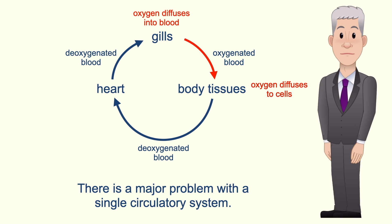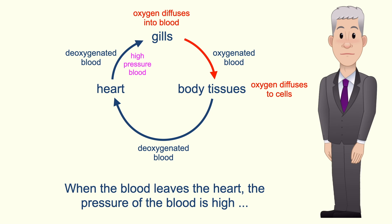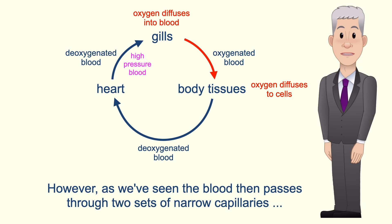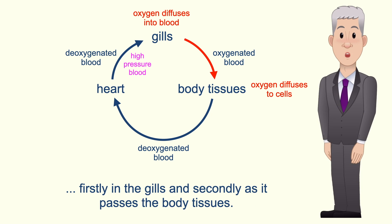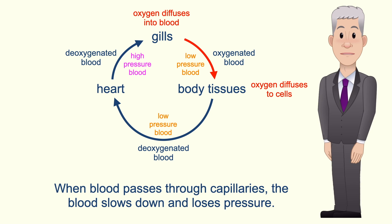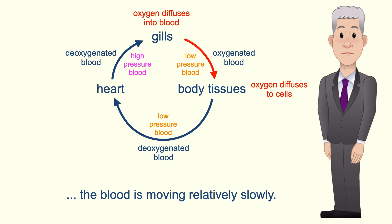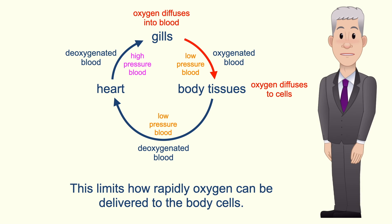Now there's a major problem with a single circulatory system. When the blood leaves the heart the pressure of the blood is high and the blood is moving rapidly. However, the blood then passes through two sets of narrow capillaries — firstly in the gills and secondly as it passes the body tissues. Now when blood passes through capillaries the blood slows down and loses pressure. So this means that once the blood passes through the gills, the blood is moving relatively slowly, and this limits how rapidly oxygen can be delivered to the body cells.